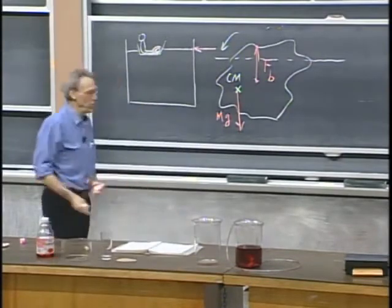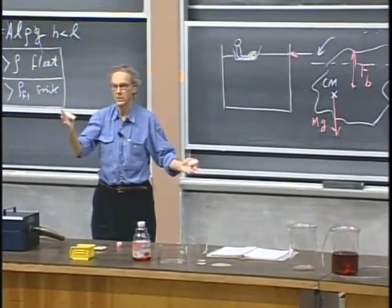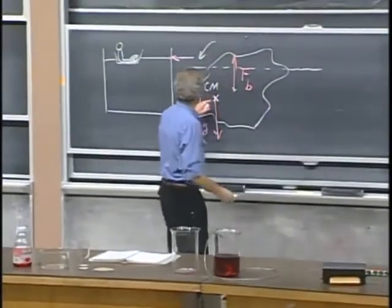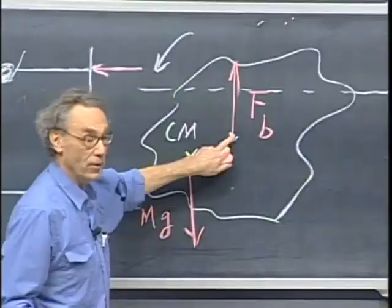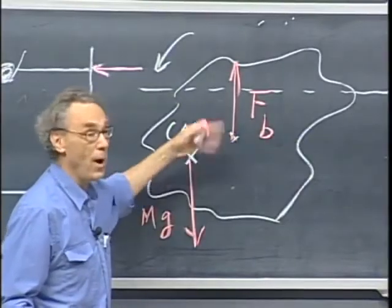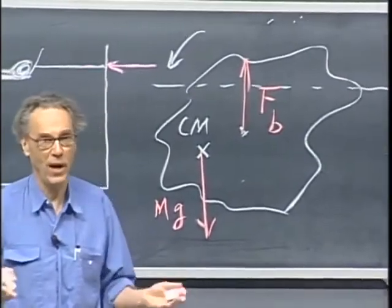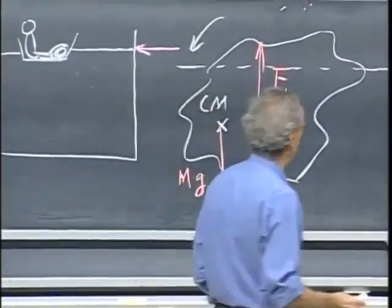Now, there are two ways that you can get them on one line. We discussed that earlier in a different context. You can either have the center of mass of the object below the center of mass of the displaced fluid or above. In both cases would they be on one line. However, in one case, there would be stable equilibrium. In the other, there would not be a stable equilibrium.